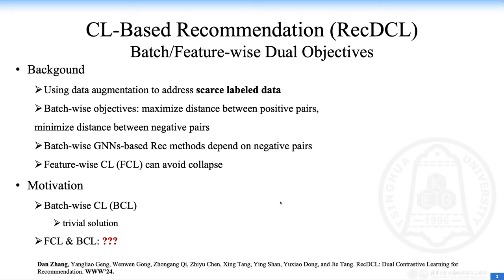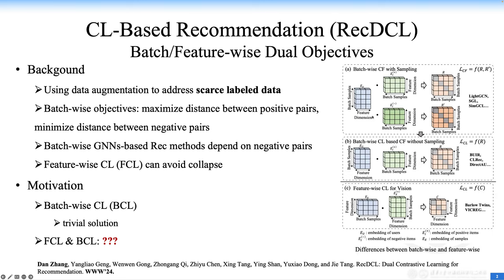Generally, contrastive learning is known as a major branch of self-supervised learning. The fundamental idea behind contrastive learning is to augment more supervised instances and conduct a pretext task with augmented data, addressing the issue of data sparsity. CL-based collaborative filtering methods focus on batch-wise objective functions aiming to maximize the similarity of embeddings between positive pairs while minimizing that of negative pairs.